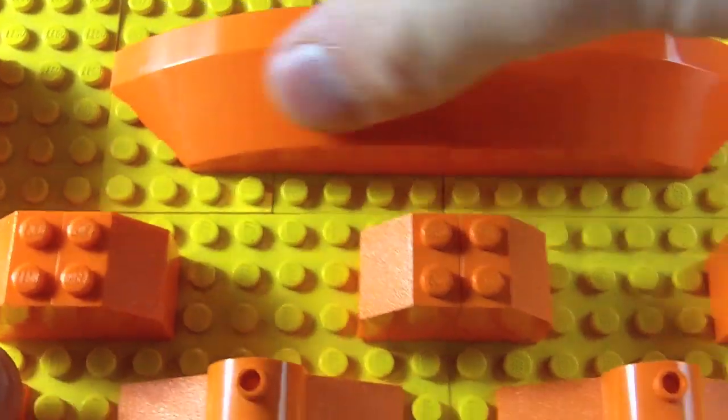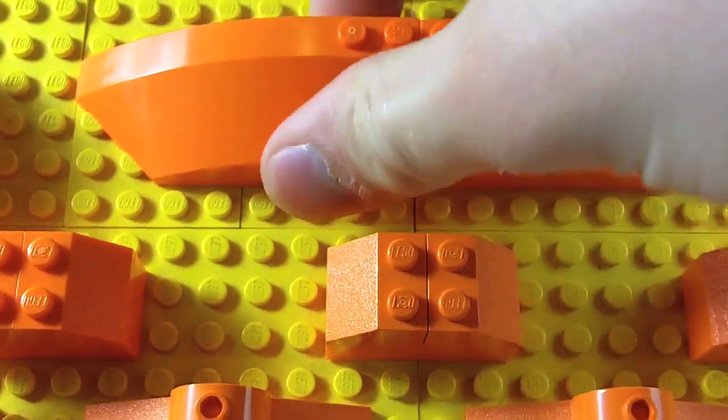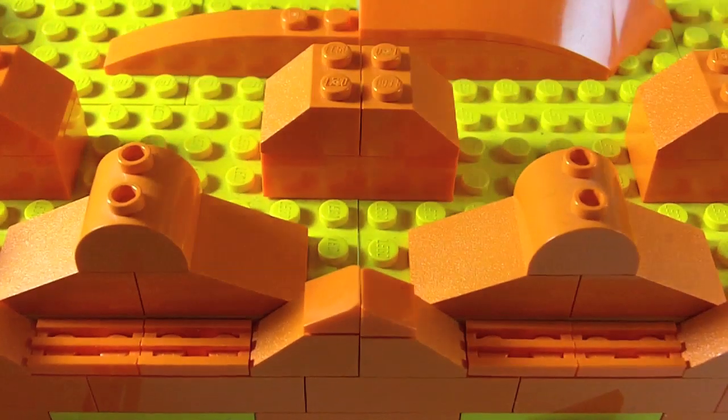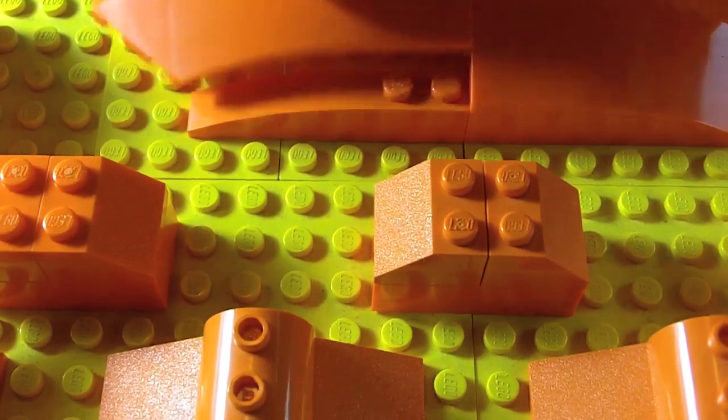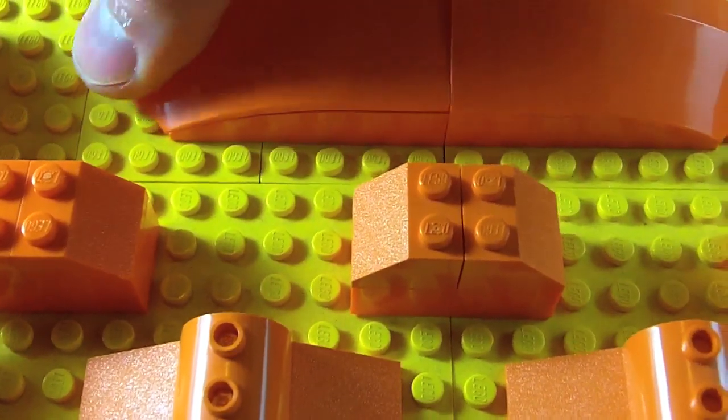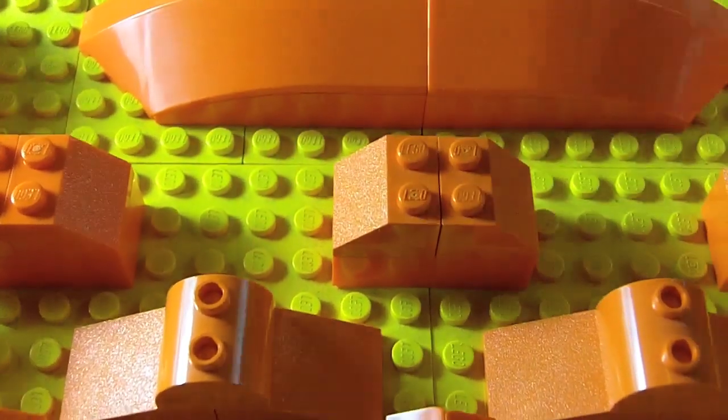Then this big curvy slope piece is from the SpongeBob bus set, and I've got that on top of a curvy slope that fills up that space nicely. So that is the main outline of the prison.